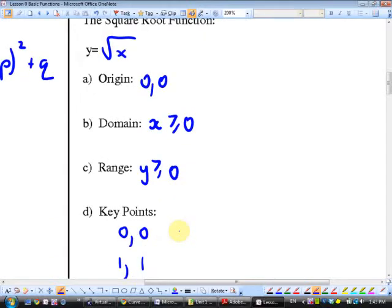Hey, what's my range? Also the same thing. Everything above are touching zero. Key points. One, one, two, four, four. One, one, four, two, nine, three. Oh, and zero, zero your origin.